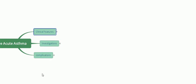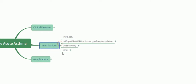Investigations include peak expiratory flow rate (PEFR), which is measured by asking the patient to blow into the device. A PEFR less than 30% indicates severe airway obstruction. Arterial blood gases also need to be done so you can check the partial pressure of oxygen, partial pressure of carbon dioxide, and pH, to find out whether metabolic acidosis is happening.